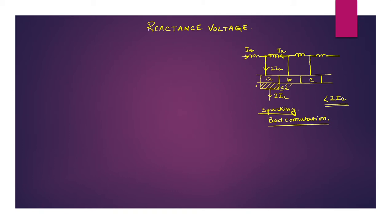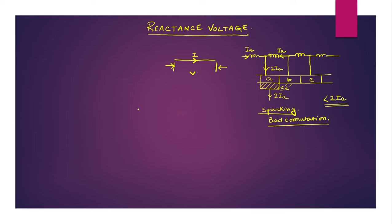Today's topic is reactance voltage. If a current i is flowing from one end to the other, there must be a voltage driving it. Here, some amount of current is flowing from segment B to the brush, so there must be a voltage being created at that point. This voltage is called the reactance voltage.